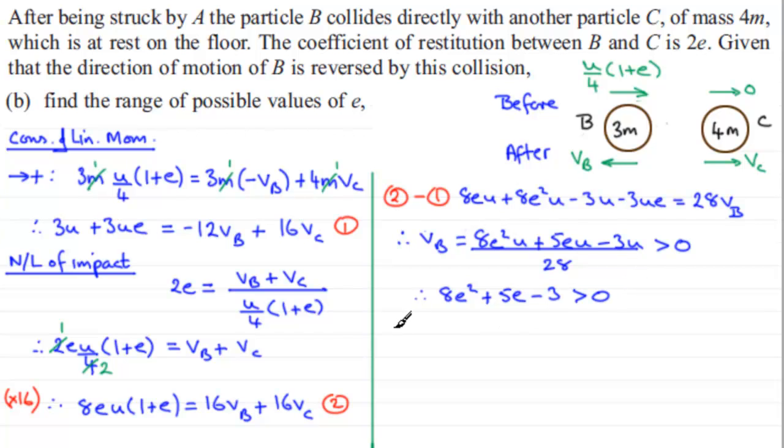Now I can factorize this. This will factorize into a couple of brackets which are going to be greater than 0. We'll have 8E and an E, then a 3 and a 1, a minus here and a plus here, so 8E minus 3 times E plus 1. The critical values that make this equal to 0 are when 8E minus 3 equals 0, so E equals 3/8, or when E equals minus 1.